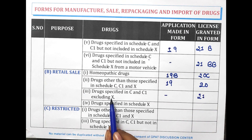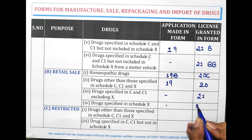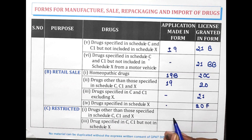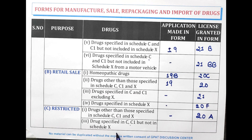For drugs specified in Schedule X for retail selling, the license is granted in Form 20F. For restricted sale of drugs other than those specified in Schedule C, C1 and X, the license is granted in Form 20A. For drugs specified in Schedule C and C1 but not in X, the license is granted in Form 21A.